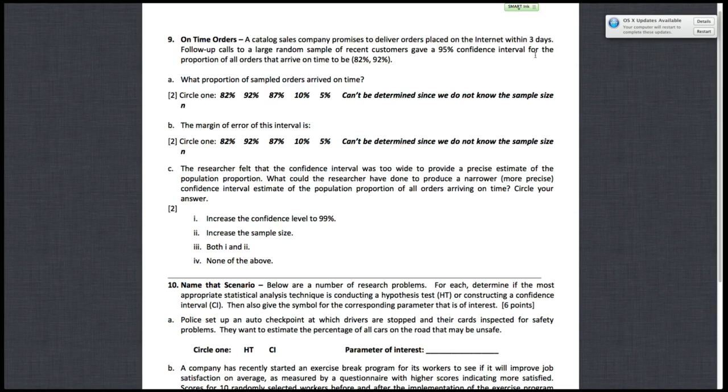So for 9, a catalog sales company promises to deliver orders placed on the internet within 3 days. Follow-up calls to a large random sample of recent customers gave a 95% confidence interval for the proportion of all orders that arrive on time to be 82% to 92%.